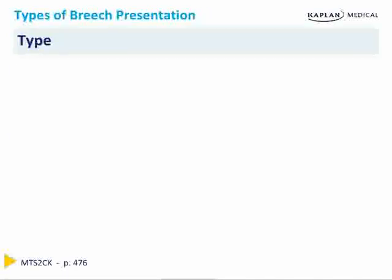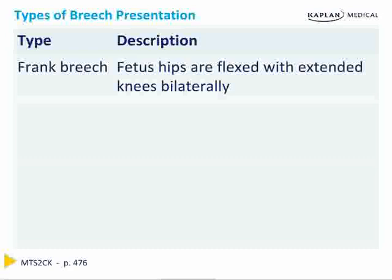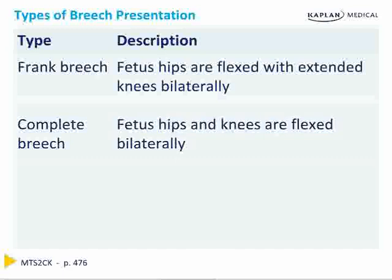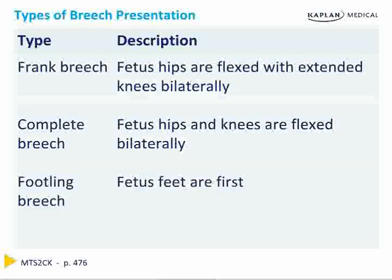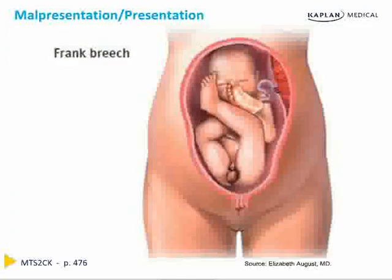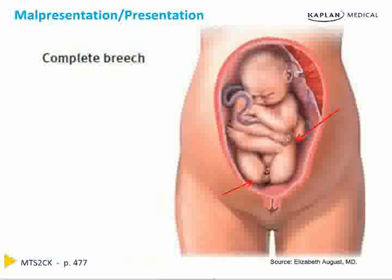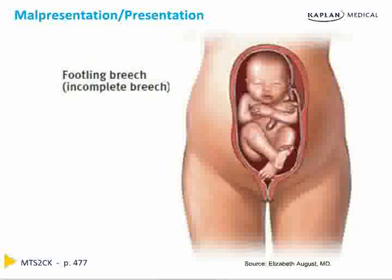The Step 2 exam may ask about different types of breech presentation. Frank breech is where the fetus's hips are flexed and knees are extended bilaterally in the pike position. Complete breech is where both the hips and knees are flexed bilaterally. Footling breech is when the fetus is feet first — either a single footling with one leg or a double footling with both legs presenting at the birth canal.